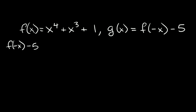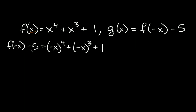So as you can see, originally we had positive x, which is why we plugged in positive x's. But here we have negative x's, so we're going to plug in negative x's this time. So here we're going to have negative x to the fourth plus negative x cubed plus one, and then we have this minus five, so we're just going to tack that on at the very end with our other constant — minus five like that.